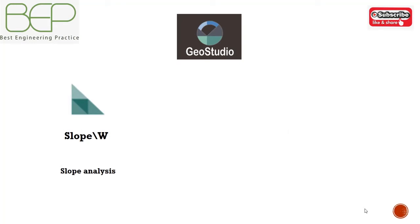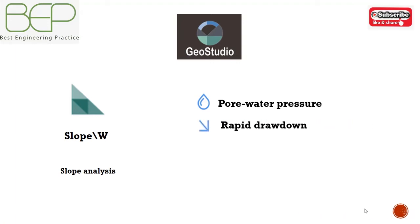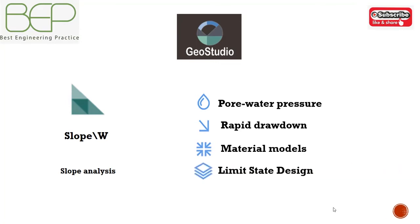Slope/W is the leading slope analysis software for soil and rock slopes. Pore pressure can be defined using piezometric lines, spatial functions, or results from GeoStudio finite element analysis. Rapid drawdown analysis can be conducted using pore-water pressure defined via piezometric lines, infinite elements, GeoStudio analysis, or the multi-stage rapid drawdown technique. Slope/W supports a comprehensive list of material models including Mohr-Coulomb, undrained, high strength, anisotropic bilinear, spatial Mohr-Coulomb, and more. Limit state design or load resistance factor design is handled by specifying partial factors on loads, material properties, reinforcement inputs, and other parameters.